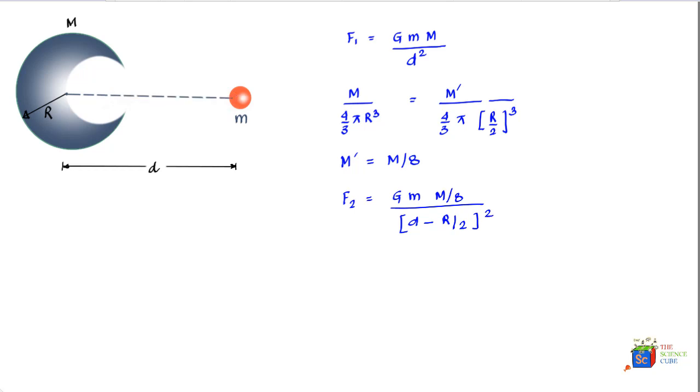So we know what is the gravitational force on this mass due to the full ball when there was no cavity, which is this, and we also know the force on this ball due to the mass which would have been over here, which is F2.